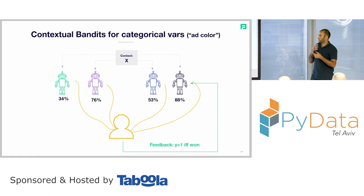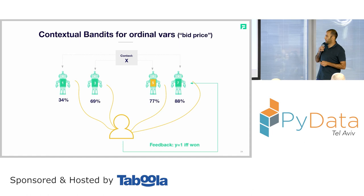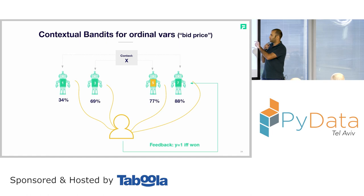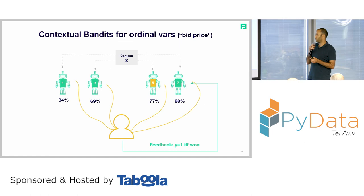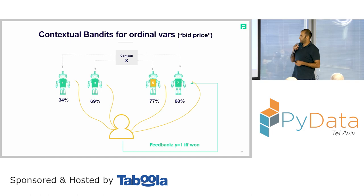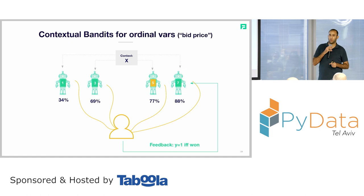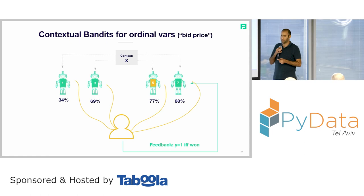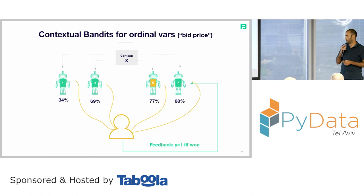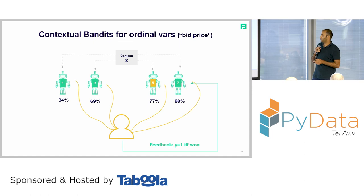What we managed to do is take this approach into prices — into ordinal variables. Each model represents a bin of prices: for example, model one stands for prices between 0 to 2, model three for prices 2 to 4, and so on. Given a context inserted into each model, we get a probability. Our objective is to win the auction, which is a classification problem — whether we won or lost — and we get feedback of one if we won and retrain the model again and again.